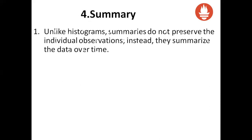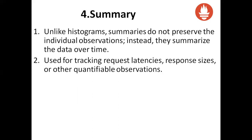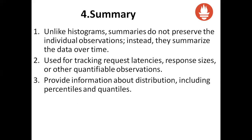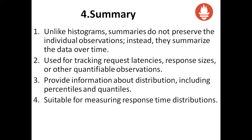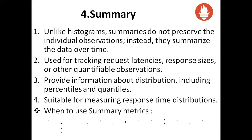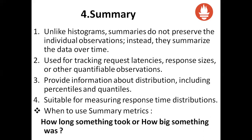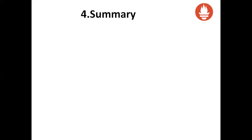The last type is the summary metric. Unlike histograms, summaries do not preserve individual observations — instead, they summarize the data over time. They are used for tracking request latencies, response sizes, or other quantifiable observations. They provide information about distribution including percentiles and quantiles, though not in as much detail as histograms. They are suitable for measuring response time distributions. When to use summary metrics: for questions like how long something took or how big something was.